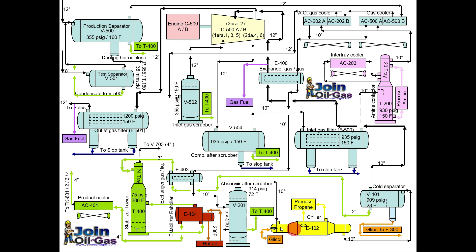Glycol injection is applied here because glycol has the tendency to absorb all the water present in the gas. At the outlet, the gas is very cool and all the water has been absorbed by the glycol. The gas then moves to the cold separator, where most of the condensate and natural gas liquids are separated and sent to the stabilization unit. The glycol is also separated in this vessel and sent to the glycol dehydration unit, where we boil off and remove all the water absorbed by the glycol. The regenerated glycol is then reused at the chiller inlet — it is a closed loop.